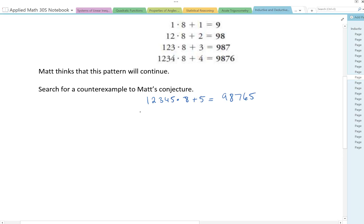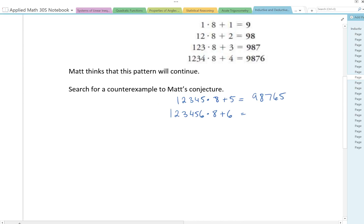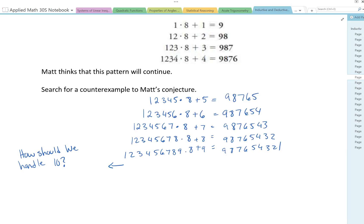So the next one would be 1, 2, 3, 4, 5, 6. Times 8 plus 6. And so on. Alright. It's a bit tedious going through this. And I get to 9. And I can see that this is going to continue. However, I have a little bit of a problem at this point. How do we handle 10?